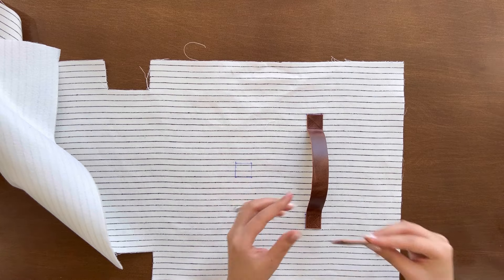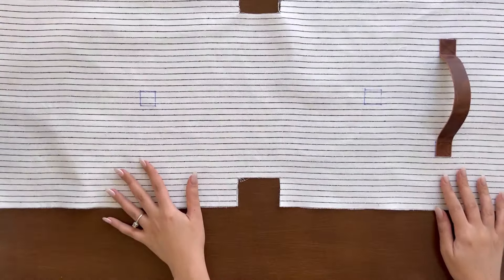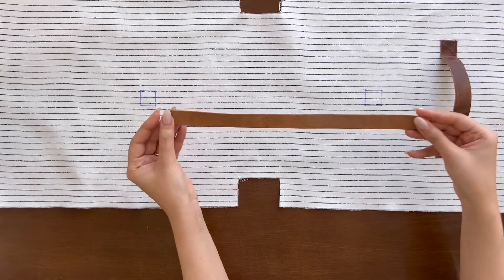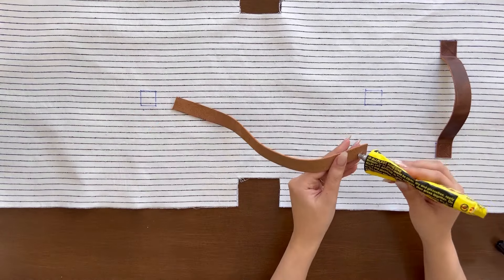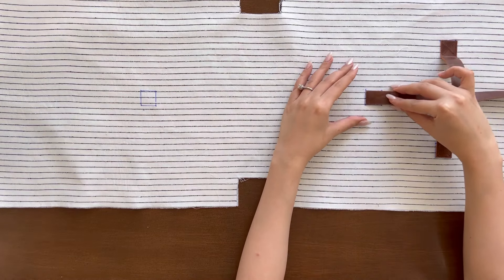Now it's time to glue the strap and the buckle connector. To avoid the confusion the right box belongs to strap and the left box belongs to buckle connector. Now take the strap and glue one end and stick it to the box belonging to the strap.